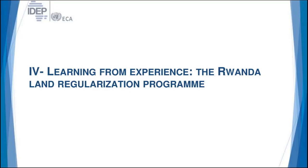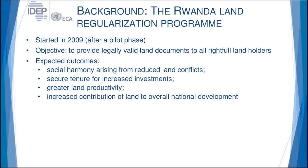Let me discuss the experience of the Rwanda land regularization program. It started after the genocide, specifically in 2009 after a brief pilot phase. The objective was to provide legally valid land documents to all rightful landholders. Expected outcomes included social harmony from reduced land conflicts, increased security of tenure for increased investment, and greater land productivity. The aspect of social harmony was crucial for a country that had just emerged from the genocide.